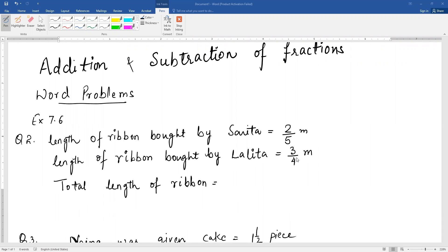What is the total length? We need to add these two lengths: 2 by 5 plus 3 by 4. These are unlike fractions. LCM is 5 into 4, that is 20.